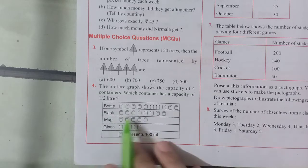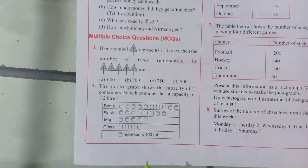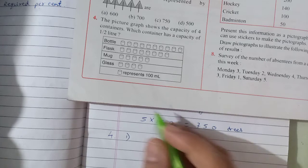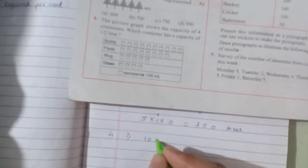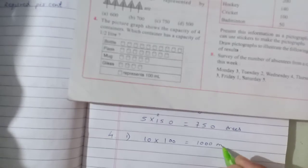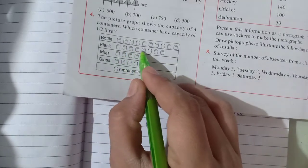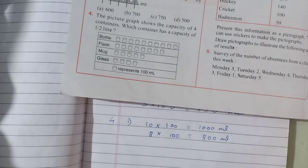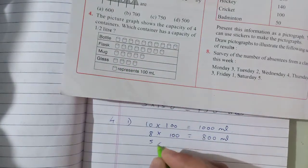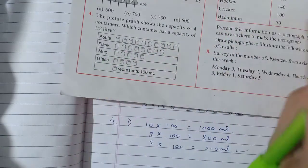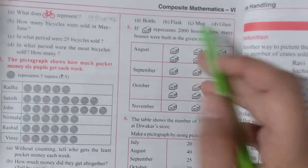Now let us find out whether the bottle, flask, mug or glass represents 500 ml. The bottle has 10 pictures — 10 into 100 is equal to 1000 ml. The flask has 8 pictures — 8 into 100 is 800 ml. The mug has 5 pictures — 5 multiplied by 100 is equal to 500 ml. Yes, we have got our answer. The answer is C, mug.